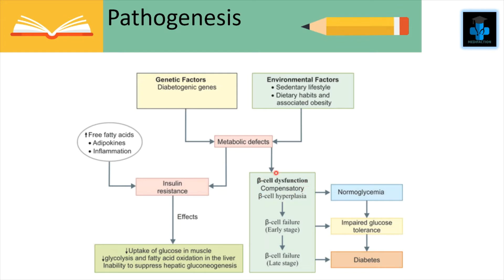Beta cell dysfunction in type 2 diabetes manifests as inadequate insulin secretion in association with insulin resistance. The pancreatic beta cells initially respond to long-term demands of peripheral insulin resistance by undergoing compensatory hyperplasia, leading to increased insulin secretion — hypersecretion. Thus insulin secretion is initially higher for each level of glucose than in controls, and this hyperinsulinemic state can compensate for peripheral resistance and maintain normal blood glucose for years.